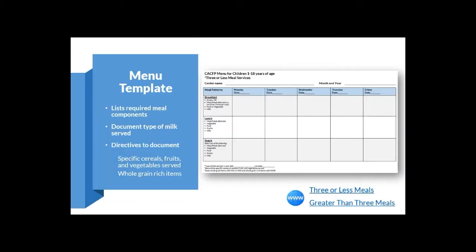Section 6 lists items that must have product labels on file to credit them to the CACFP. The DPI also has menu templates that can be used for your menus. These list the required meal components on the left side to help you know what to serve. They also include a place to document the types of milk served to different age groups, directives to document specific cereals, fruits and vegetables, and a reminder to note which items are whole grain rich. There is a template for three or less meals as well as greater than three meals.